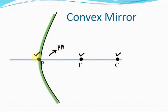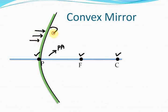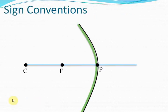What we'll really do in this chapter is study exactly what happens to rays when they are incident on a concave mirror and a convex mirror. For example, if rays are coming like this, where will these rays go? That's what we'll study. But before that, we'll have to learn about sign conventions.